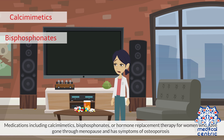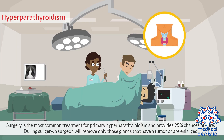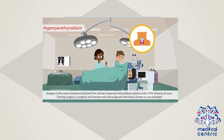Medications including calcimimetics, bisphosphonates, or hormone replacement therapy may be prescribed for women who have gone through menopause and have symptoms of osteoporosis. Surgery is the most common treatment for primary hyperparathyroidism and provides a 95% chance of cure. During surgery, a surgeon will remove only those glands that have a tumor or are enlarged.